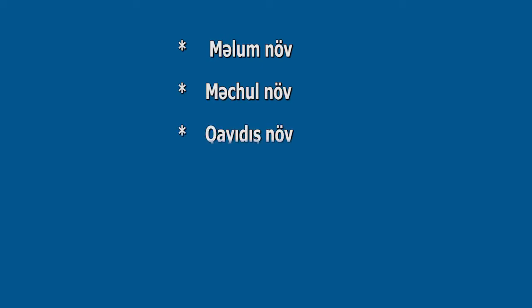Gəlin onlarla yaxından tanış olaq: məlum növ, məchul növ, qayıdış növ, şəxsiz növ, icbar növ, qarşılıq-birgəlik növ. Bu məna növlərinin nə kimi fərqləri var? Onları bir-birlərindən necə fərqləndirmək olar? Bugünkü mövzumuzda feylin qramatik məna növlərini bir-birindən fərqləndirməyin yollarını öyrənəcəyik.